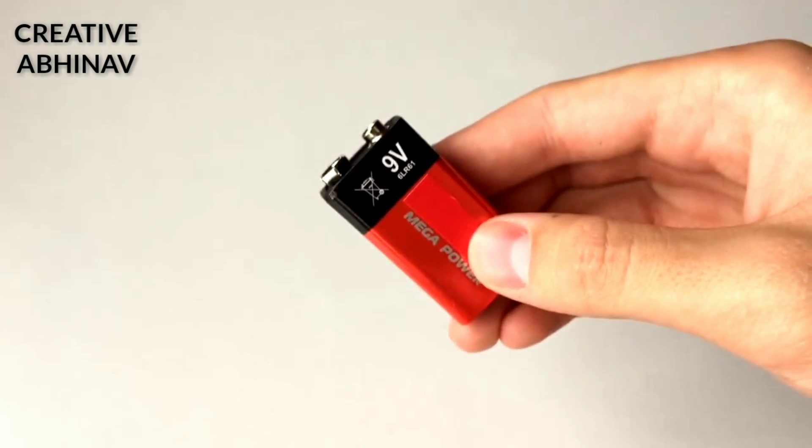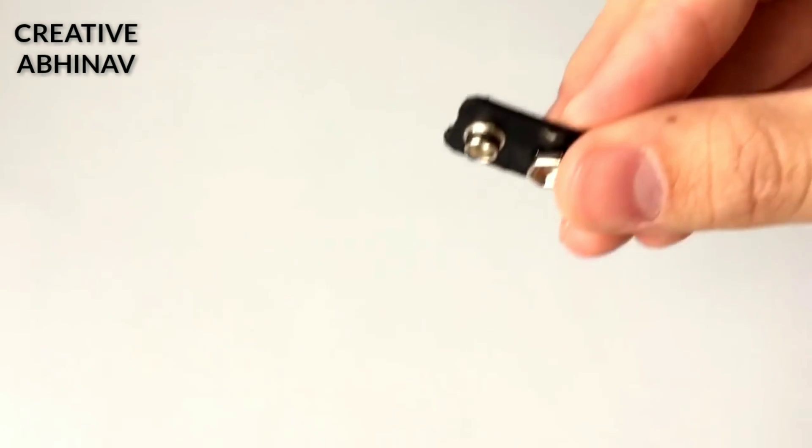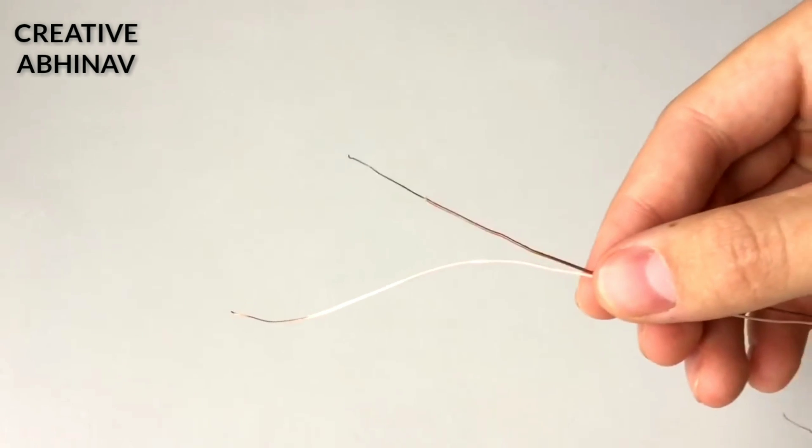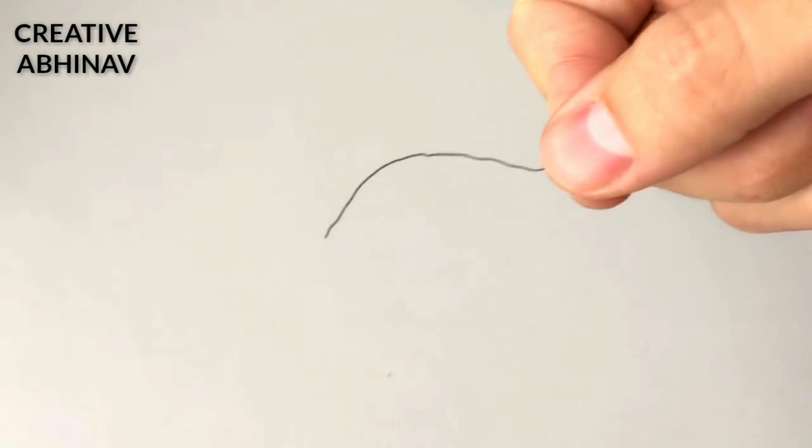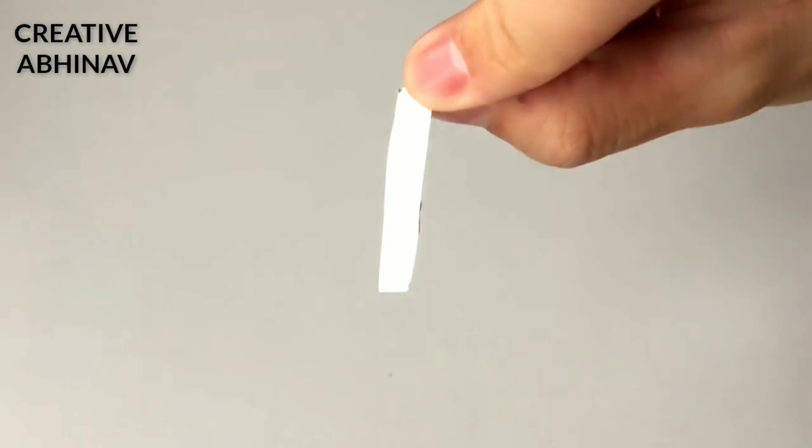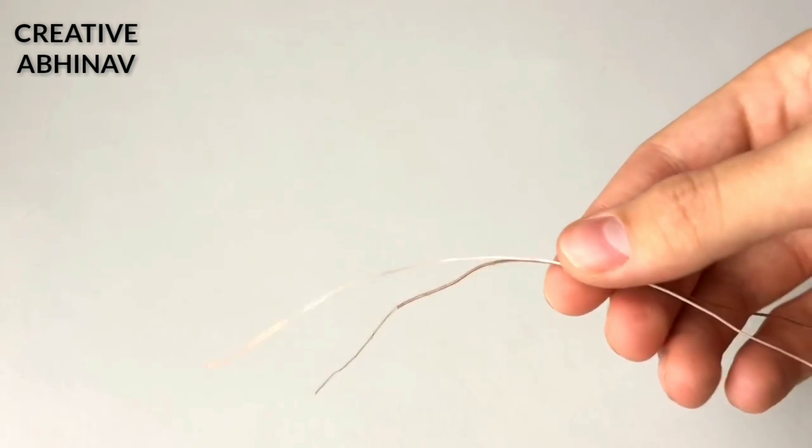Materials required: a 9-volt battery, a 9-volt battery connector, two copper wires, a nichrome wire, an on-off switch, and an aluminum sheet. Now take two copper wires, then we have to connect it on the 9-volt battery connector.